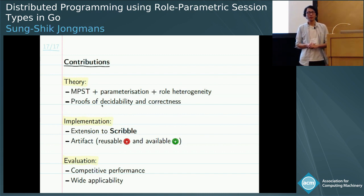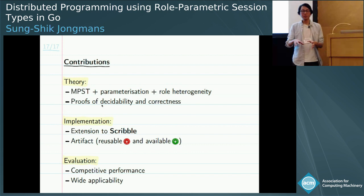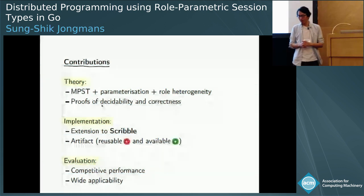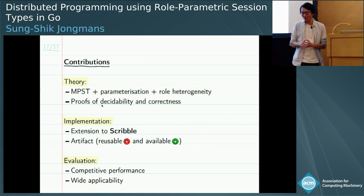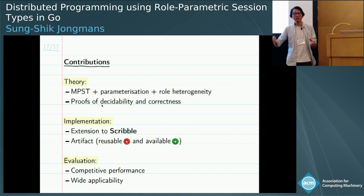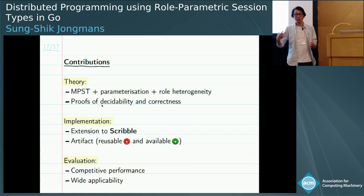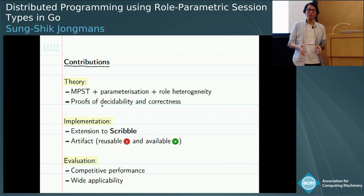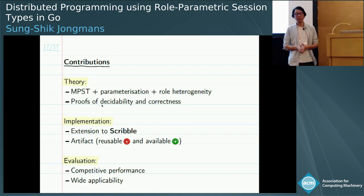Question from the room: did you compare the original HTCAT that you couldn't verify with the new PGET version you propose? Yes, we did, and they are almost the same — but not quite. In the original version, the number of fetchers can depend on the value received from the server, i.e., it can depend on the file size. For us that is currently not possible, but we are working on allowing the protocol to be dependent on values received during the session. That is part of our future work.